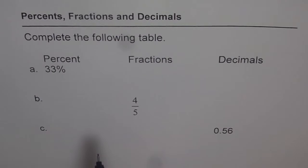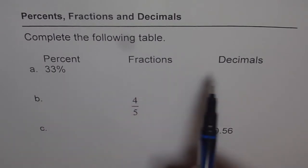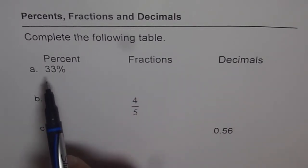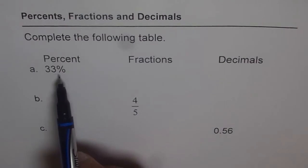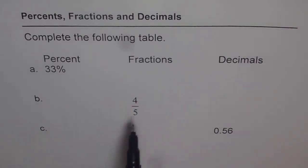The question here is complete the following table. We have percentages, fractions, and decimals. If I say 33%, we need to convert it to decimals and fractions. Here I've given you 4 over 5 as a fraction - convert 4 over 5 into percent and as decimal. Then we have a decimal number - convert that decimal number into percent and fractions. Copy this table, pause the video, write down your solution, and then check my solution.